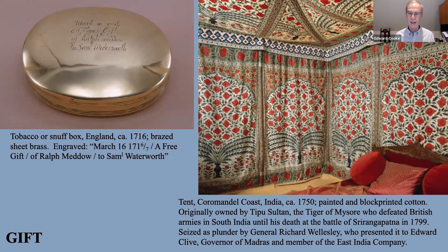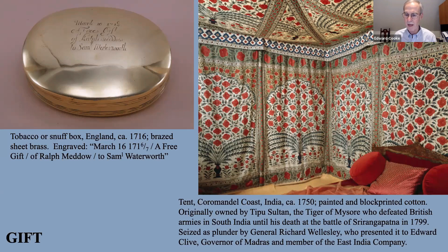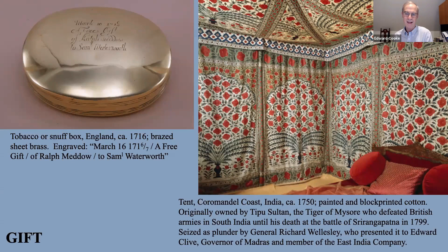Tipu Sultan was the person whom the British feared most — they believed he was the last person to defeat the British army before the American Revolution, and were worried he would form an alliance with the French to drive the East India Company out of India at the end of the 18th century. They went all out to defeat and kill Tipu Sultan in Mysore, and his palace was ransacked by East India Company soldiers. It was seized as plunder by Richard Wellesley, who presented it to Edward Clive, governor of Madras and a member of the East India Company — and it now hangs in Powis Castle in Wales as part of the Clive Memorial.